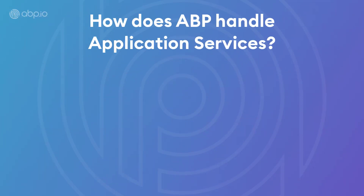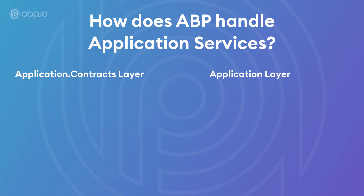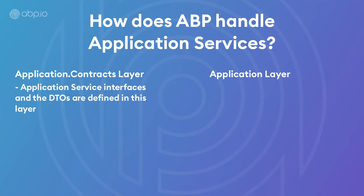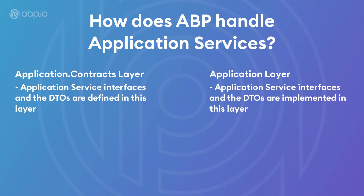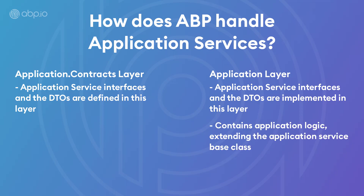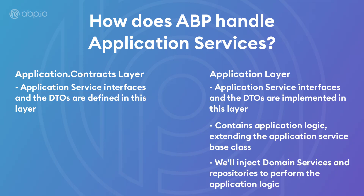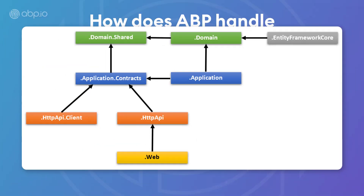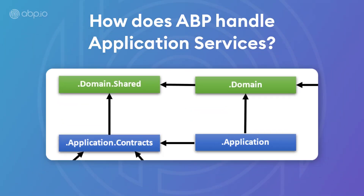So how does the ABP framework handle application services? The application service interfaces and the DTOs are defined in the application contracts layer, and the implementation of these interfaces lives in the application layer. It contains the application logic, extends the application service base class, and injects domain services and repositories to perform the application logic. The application contracts layer references the domain shared layer, whereas the application layer references the domain layer.